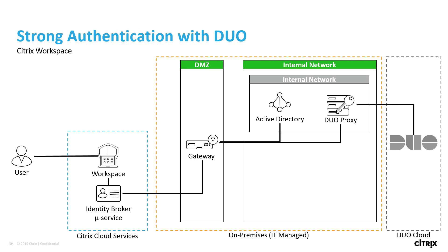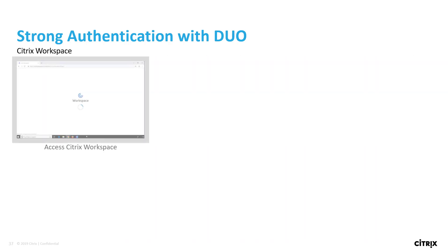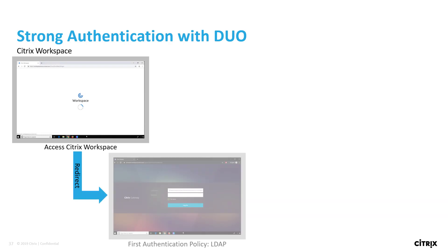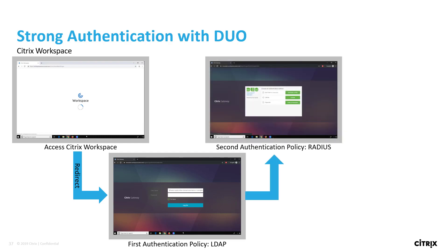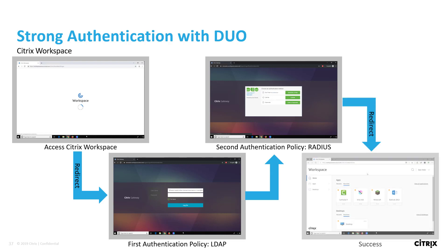At a high level, the user flow is as follows. The user connects to workspace, which redirects the user to an on-premises gateway where they must authenticate to LDAP for the first authentication challenge. The second authentication challenge is via a RADIUS policy which incorporates the Duo proxy server. Once authenticated with Duo, the user is then authorized to see a list of the available resources within the workspace environment.